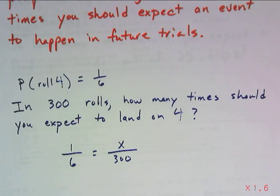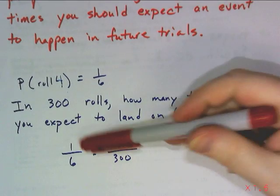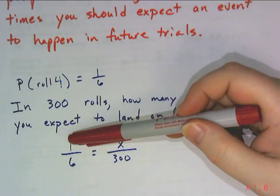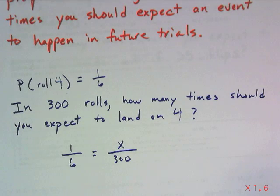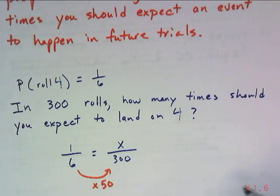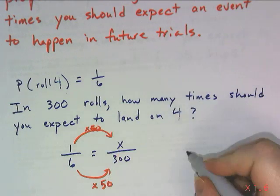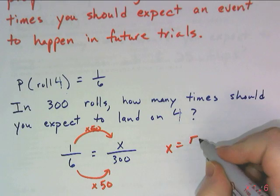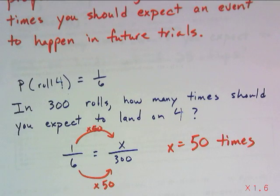So that's how I can set up my proportion. 1 out of 6 should equal how many out of 300? You can do this a few different ways, but I know that 6 times 50 gives me 300. So 1 times 50 tells me that x is equal to 50. I should expect to land on the 4 fifty times.